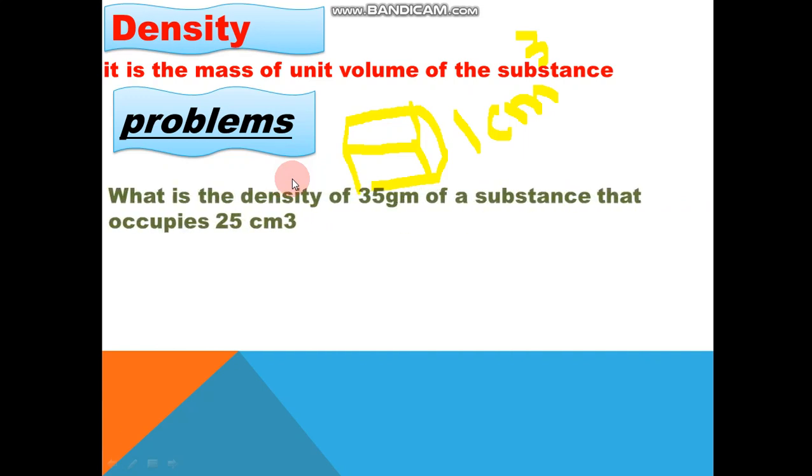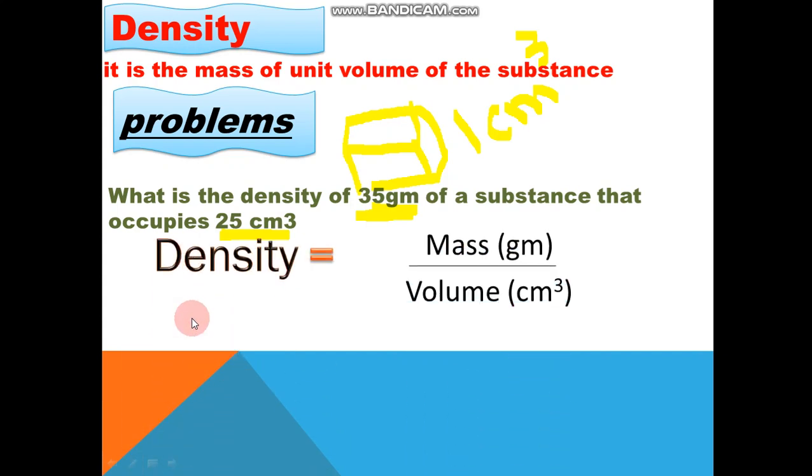تعالوا معي نعمل problem. What is the density of 35 gram of a substance that occupies 25 cubic centimeter? We will write the law first. Density equal mass divided volume. The mass is 35 gram divided 25 the volume. It will be 1.4 gram per cubic centimeter.